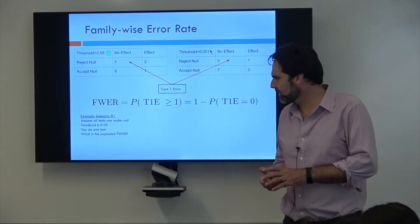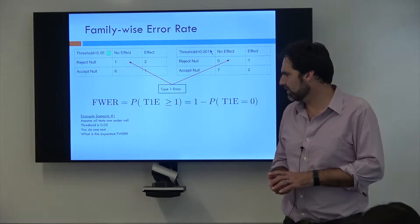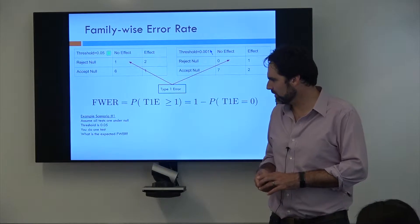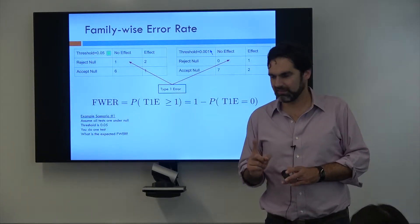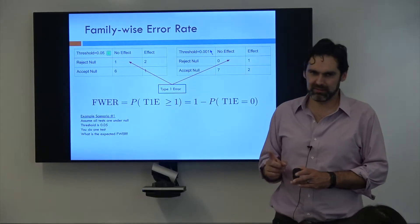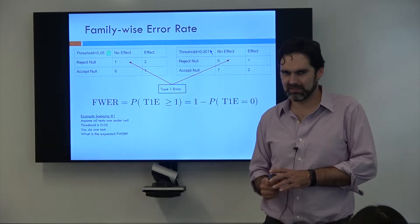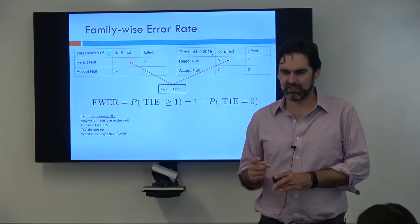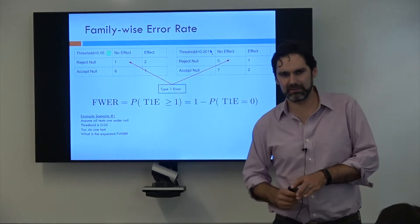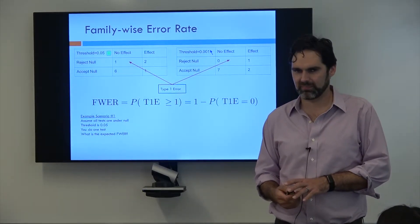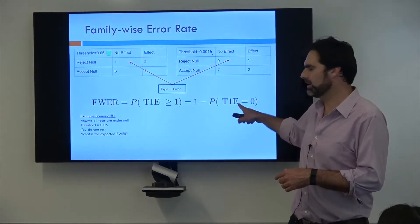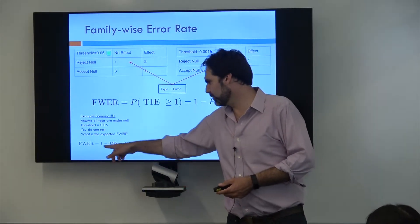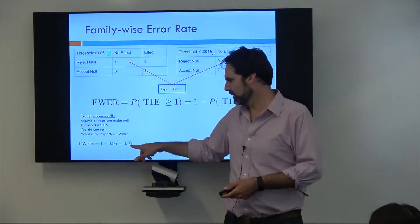So let's do a scenario here. Under our scenario, we can assume that all tests are null, so we actually don't expect to see anything in the data. There's no real effects. And we have this threshold of 0.05, and you do one test. So what is your expected family-wise error rate? What's a type 1 error? It's a false positive, right? And if I do one test and my significance threshold is 0.05, what's my probability of a false positive? Five percent. So what's the probability of not a false positive? Ninety-five. Right. So my family-wise error rate is one minus my probability of not a false positive, which is 0.05.